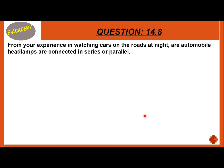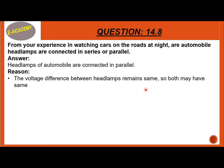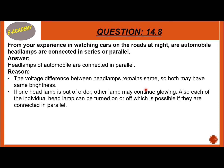Question 14.8: From experience watching cars on roads at night, are automobile headlamps connected in series or parallel? Headlamps of automobiles are connected in parallel. The reason is that the voltage across each headlamp remains the same, so both have the same brightness. If one headlamp goes out of order, the other continues glowing. Also, each individual headlamp can be turned on or off independently.